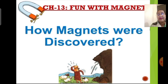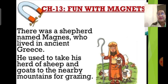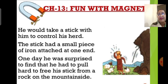Around 600 BC, there was a shepherd boy who lived in Greece. His name was Magnus. A shepherd raises sheep and goats and takes them to the countryside for grazing. Magnus used to take his herd of sheep and goats to the nearby green hills for feeding them, controlling his herd with his stick.